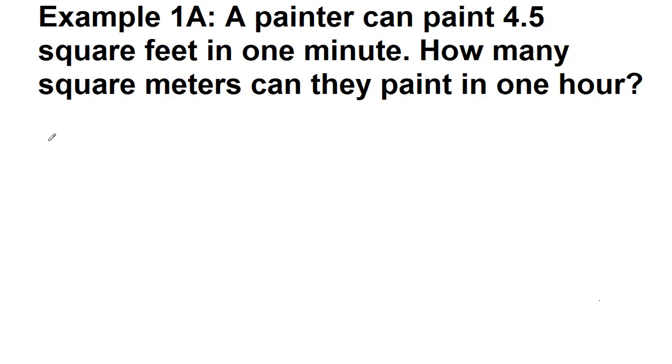In this first example, we have that a painter can paint 4.5 square feet in one minute. How many square meters can they paint in one hour? With the train tracks unit conversion method, one of the things that we always want to do is say what we start with. So we have 4.5 square feet, the unit of feet are squared, and because that's happening every minute, that is per minute.